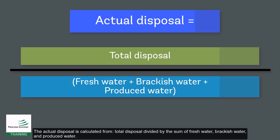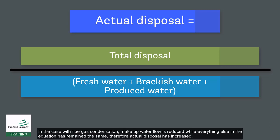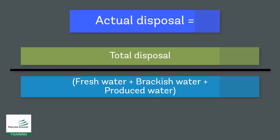The actual disposal is calculated from total disposal divided by the sum of fresh water, brackish water, and produced water. In the case with flue gas condensation, makeup water flow is reduced while everything else in the equation has remained the same. Therefore, actual disposal has increased.